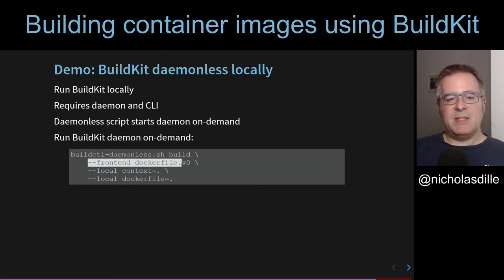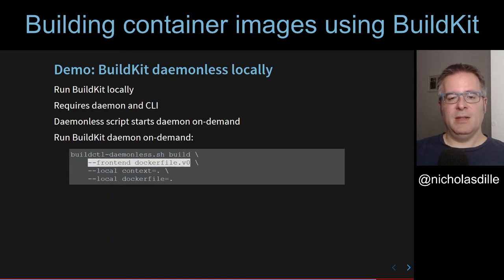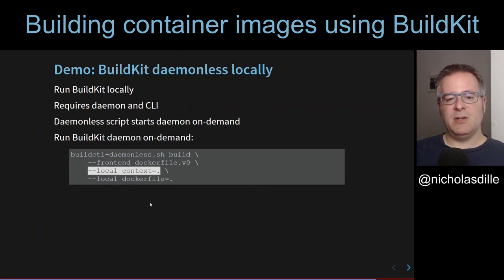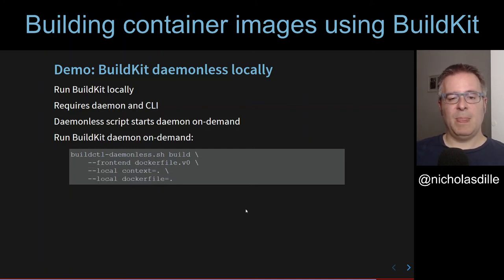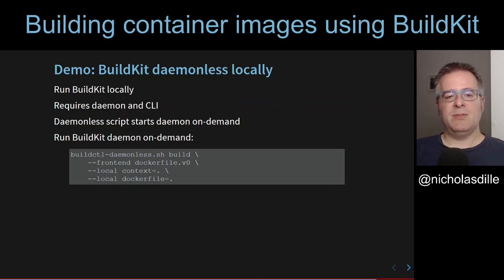What you need to specify when using the daemonless script is: you need to tell BuildKit which frontend to use — the frontend is the parser for the input file, in this case it's meant to use Dockerfile. You need to tell it where the build context is, which is often dot but sometimes somewhere else. And you must tell BuildKit where the Dockerfile lives. If you do all of that, it will start the daemon, run the build against the daemon, and then terminate the daemon again.